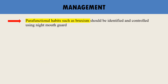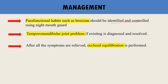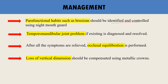If attrition is resulting from parafunctional habits such as bruxism, these should be identified and controlled using a night mouth guard. Temporomandibular joint problems, if present, are diagnosed and resolved. After all symptoms are relieved, occlusal equilibration is performed so that no abnormal occlusal stresses exist in the mouth. In cases of loss of vertical dimension, it should be compensated using metallic crowns. In this manner, attrition cases can be managed systematically.